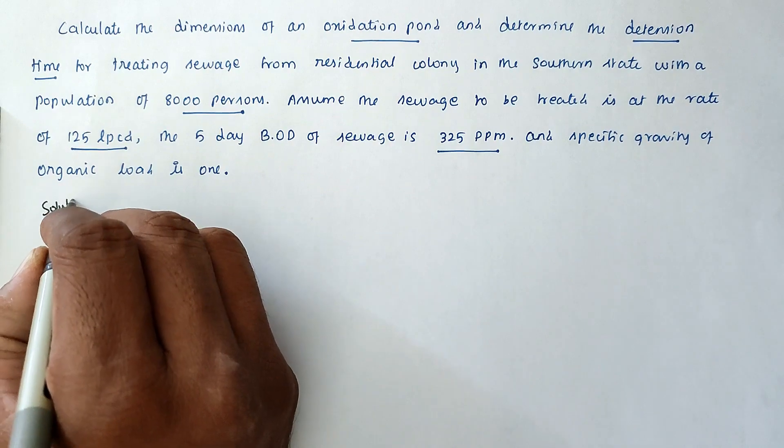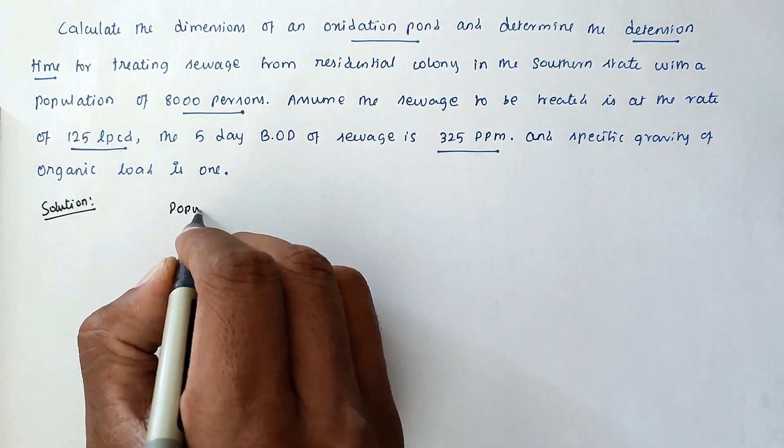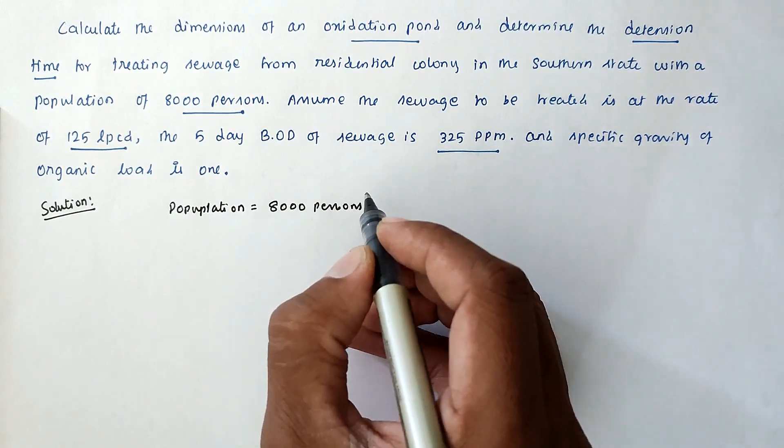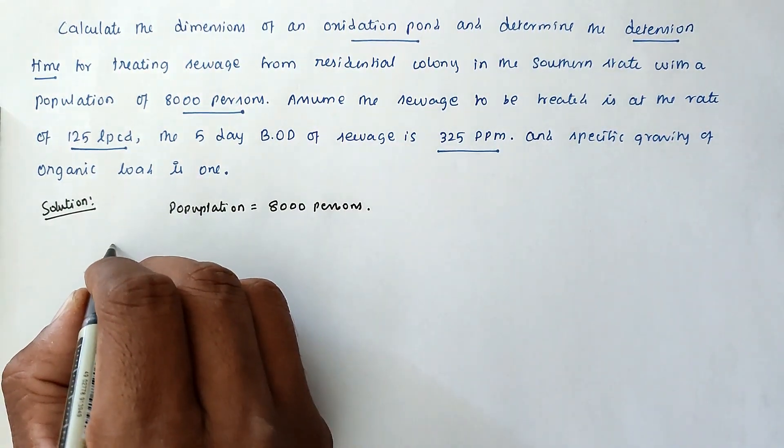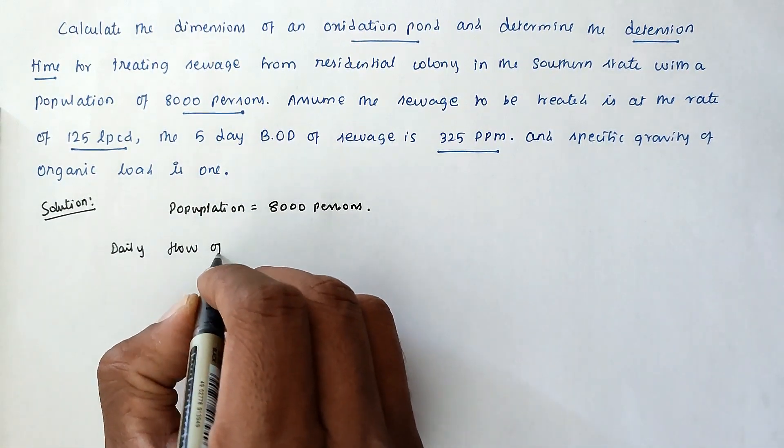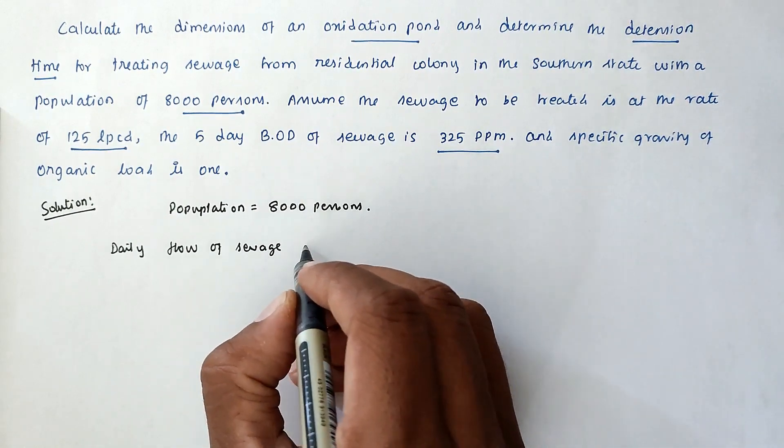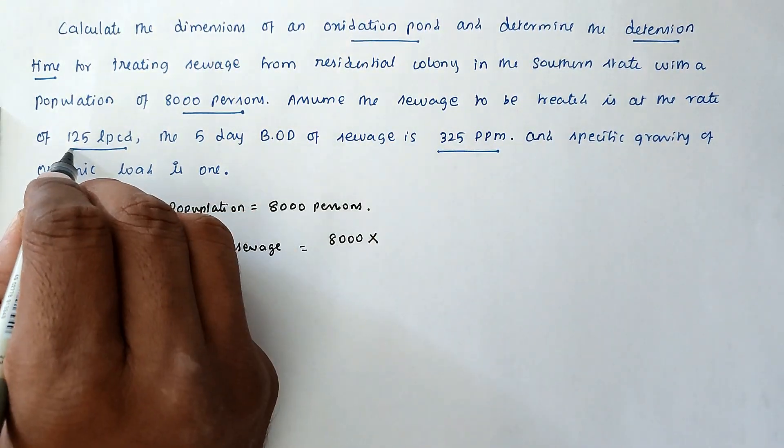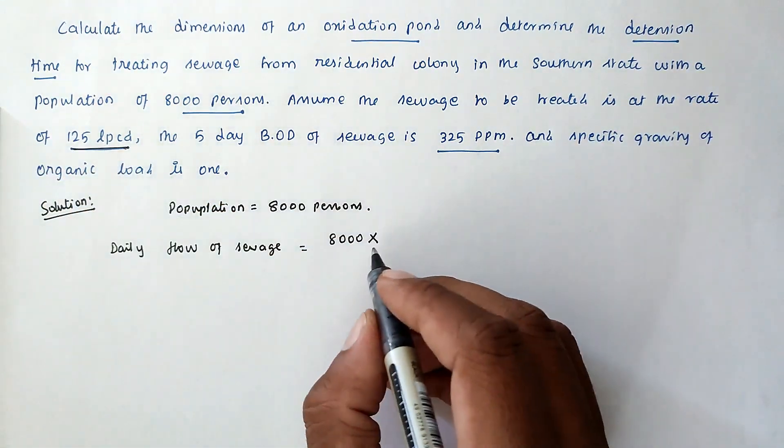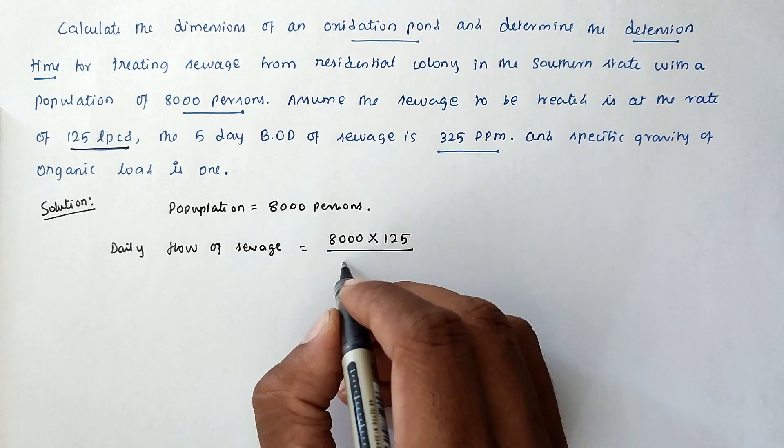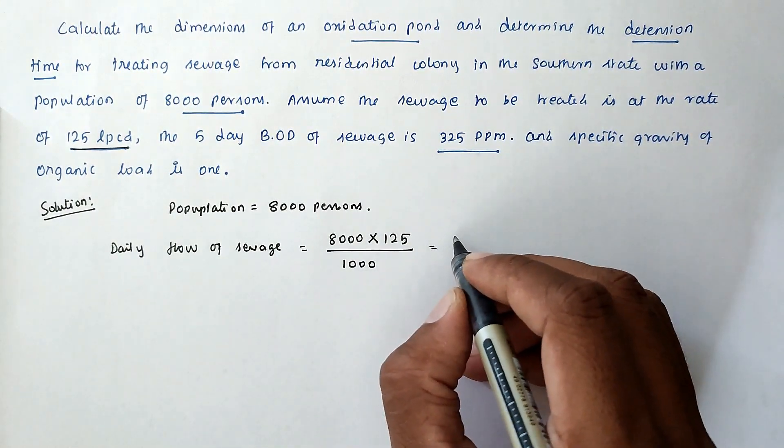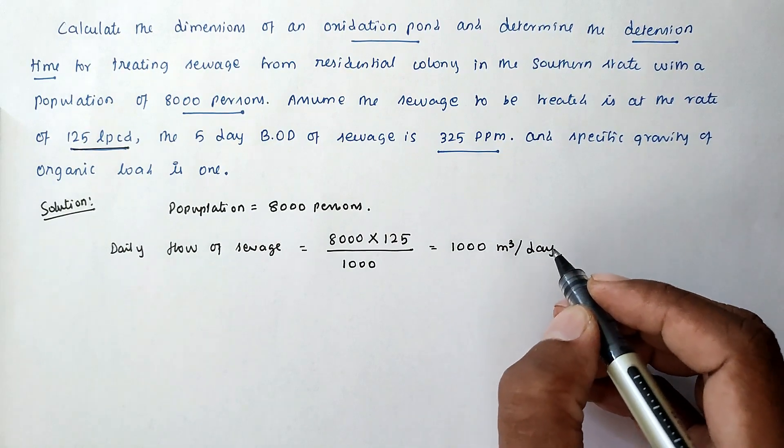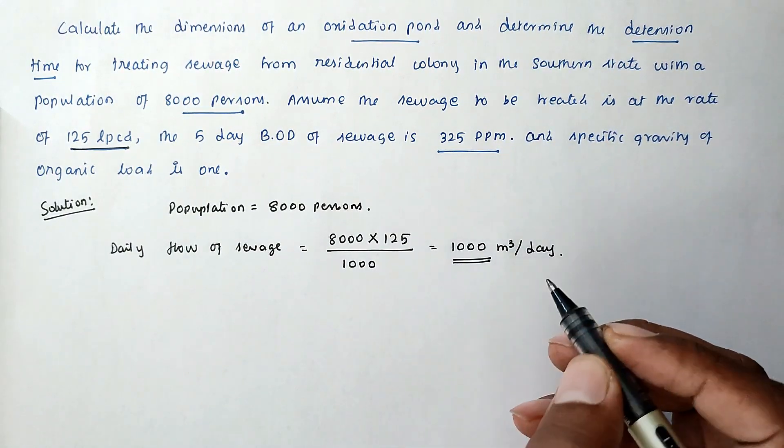Solution: the population given is 8000 persons. First we have to find out the daily flow of sewage. Daily flow of sewage is equal to 8000 population into the treatment rate of 125 LPCD, so 125 divided by 1000. We got the value of 1000 meter cube per day.